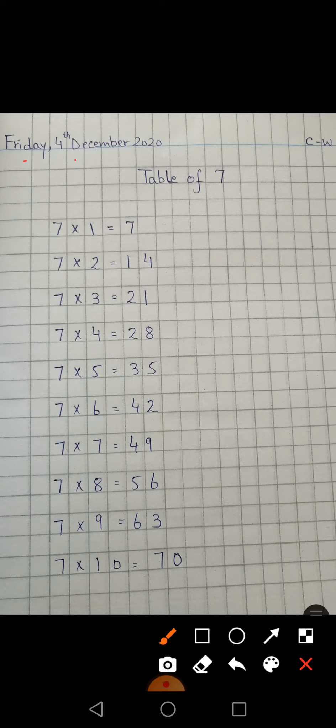As you know, first of all you have to write your day and date: Friday, 4th December 2020. In this area, you will write 'C.W.' and then 'Table of 7'. You have to write one digit in one box. Seven ones are 7, which means 7 one time is 7.